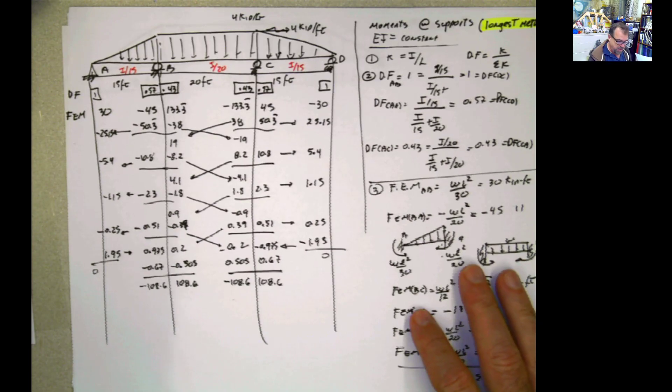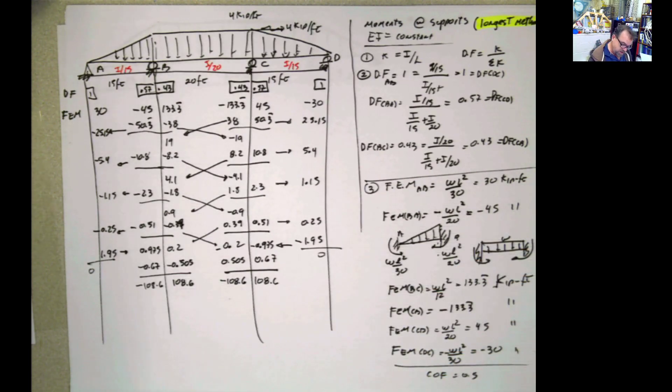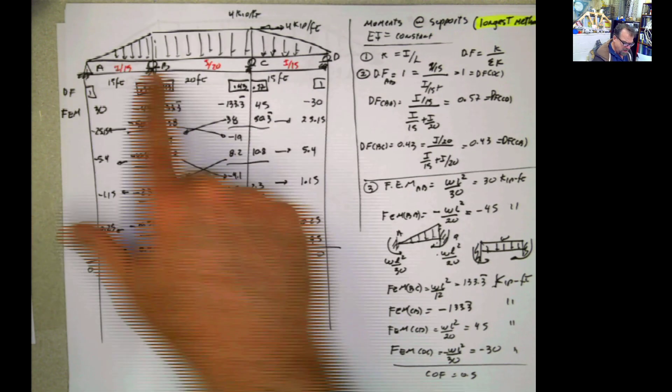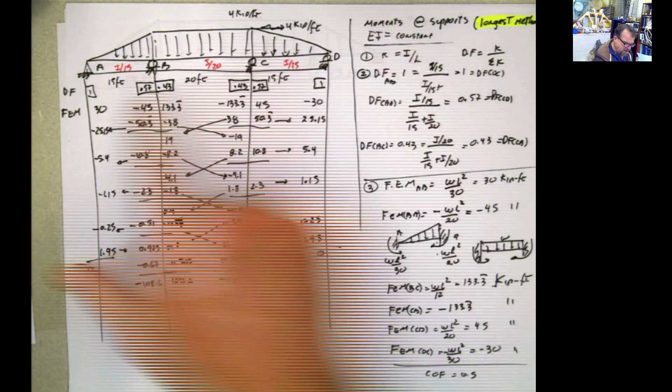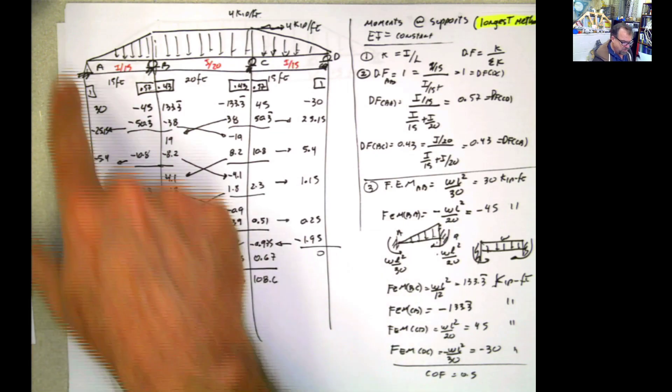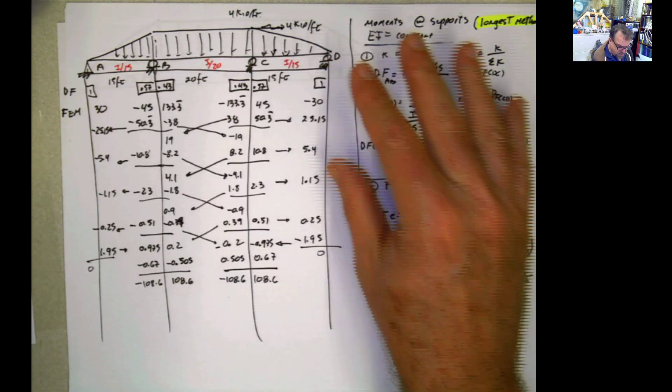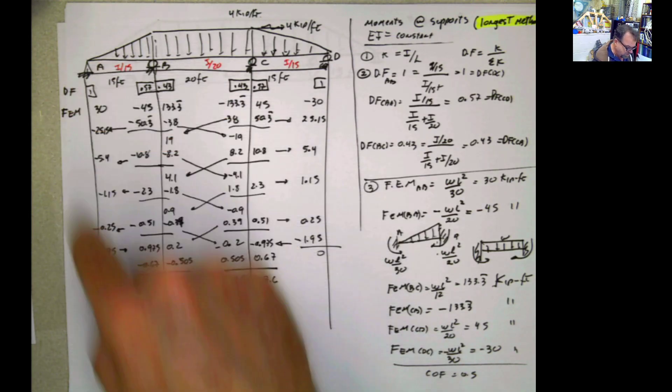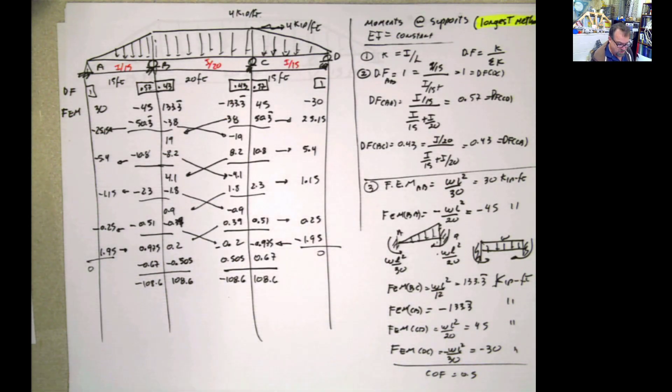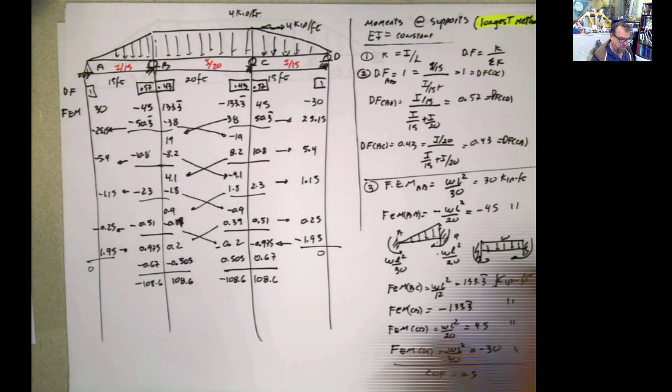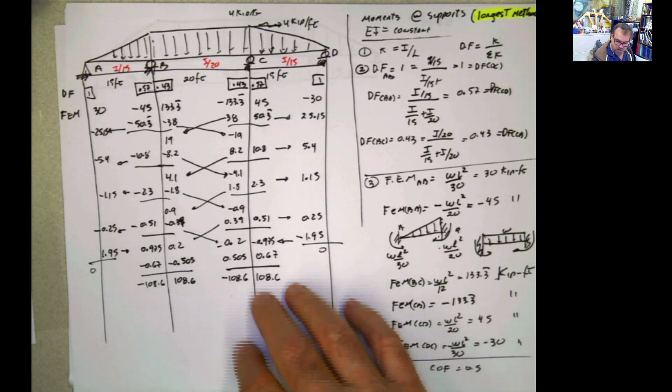We did this, the first one, and we assumed nothing was happening. I call this the longest method because it is the longest method. We said, OK, I'm going to assume that I'm going to lock and unlock every join every time. So I'm not going to assume that this is a pin when I locked it. I know it's a pin. I know the final moment should be 0. But I'm going to assume that I don't know anything. I'm not going to modify any k. I'm not going to modify any carry-on factor. And we did this problem, and we got this value.